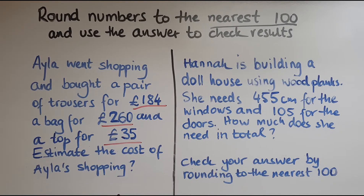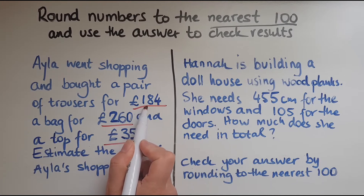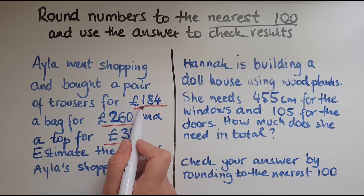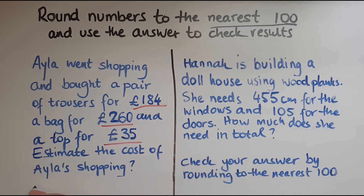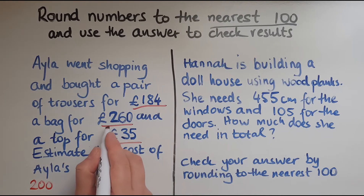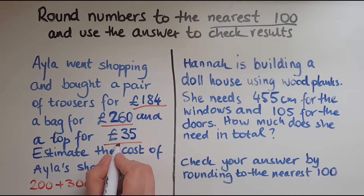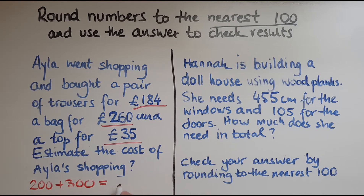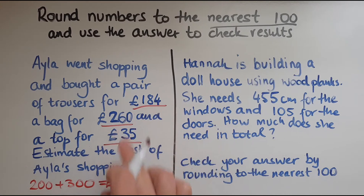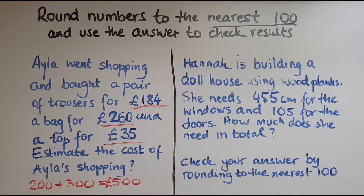So I'm going to round these: 184 to the nearest hundred is 200, because it's closer to 200 than to 100. 260 to the nearest hundred is 300. And 35 to the nearest hundred is zero because it's below 50, so I don't even need to add that. So 200 and 300 makes 500 pounds — that gives us a rough figure of how much Alia spent shopping.